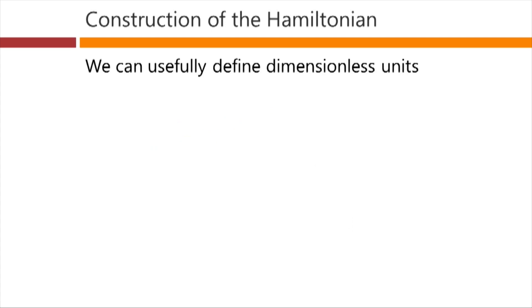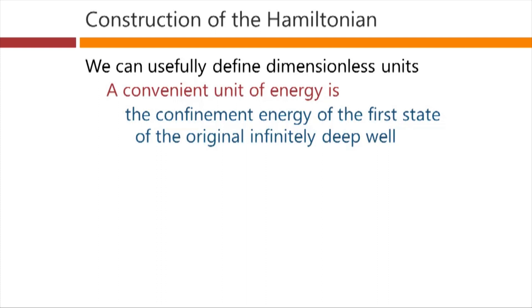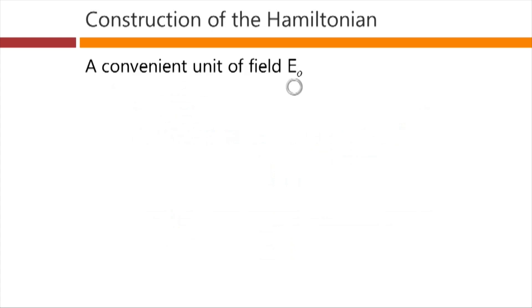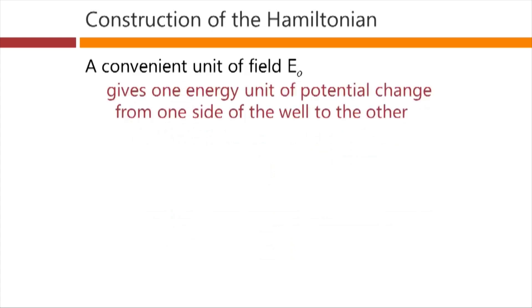We can usefully set this problem up in dimensionless units. A convenient unit of energy is the energy of the confinement of the first state in the original infinitely deep well, so E1 infinity. And in those units, the eigenenergy of the nth state of the problem will be eta n in dimensionless form, that's the actual energy of the nth state in our real problem, including the field, divided by E1 infinity, our unit of energy. A convenient unit of field, E0, is one that would give one energy unit of potential change from one side of the well to the other. So that would be a field unit that corresponds to that confinement energy of the first level in the well divided by the electronic charge e times the width of the well, Lz.